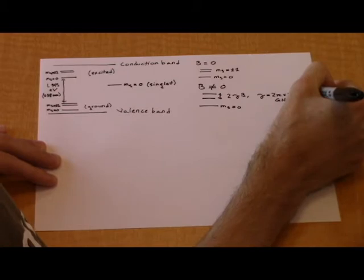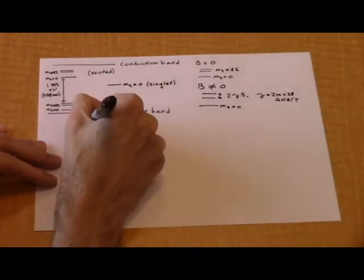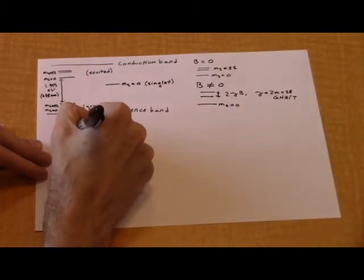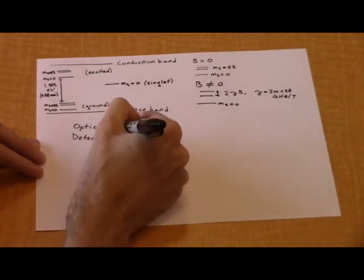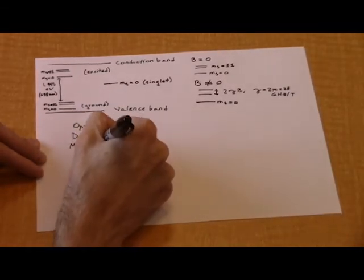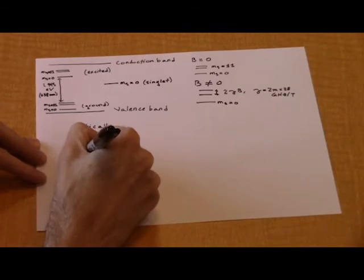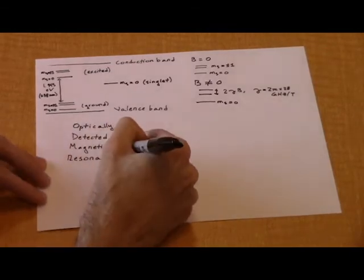A common way to use N-V centers to sense magnetic fields is through the use of Optically Detected Magnetic Resonance, or ODMR. Starting with a fluorescing center not in a magnetic field, a secondary microwave source is swept.